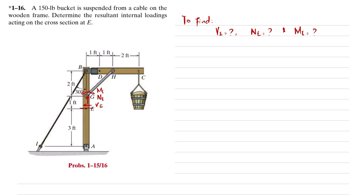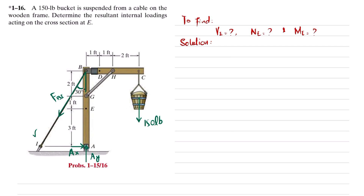The first step is that there is a support at point A. If we remove this support, there will be reaction forces: Ay is the vertical force and Ax is the horizontal force. Similarly, due to wire BI, we will have a force FBI acting at 30 degrees from the vertical line. Due to the bucket, the load is 150 pounds. Using equilibrium conditions, we will find Ax, Ay, and FBI.